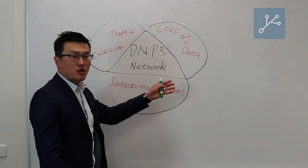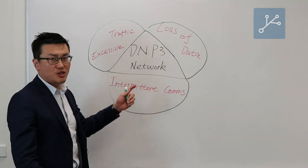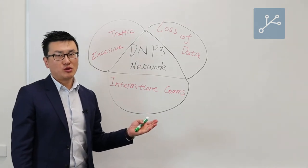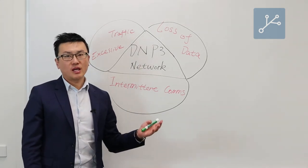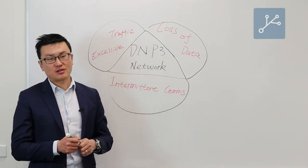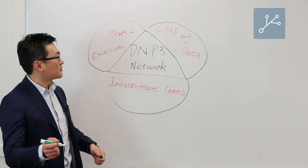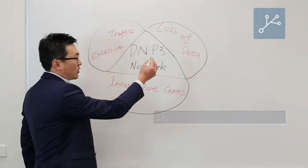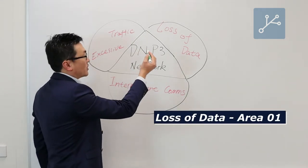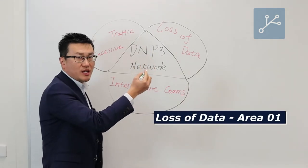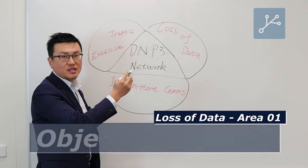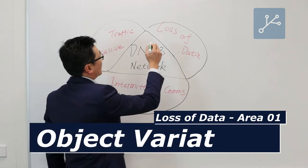For each of those major issues, I offer you three areas for investigation. For loss of data, the first area to look at is called object variance.